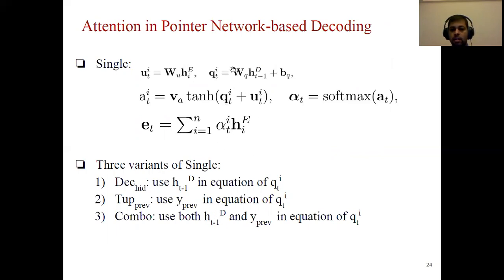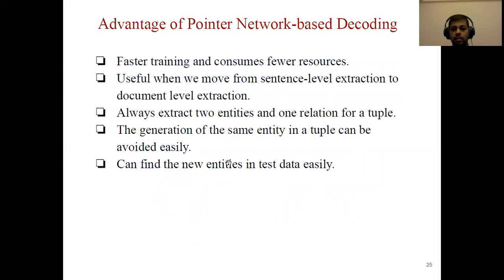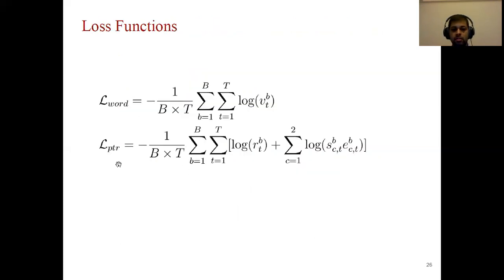The three attention variations are: using the LSTM hidden vector to compute query q; using y_prev to compute q; and using a combination of the hidden vector and y_prev to compute q. There are clear advantages of the pointer network-based decoding: training is much faster and consumes less GPU memory; it always extracts exactly two entities and one relation for a tuple; and generating the same entity in a tuple can be easily avoided using our inference constraints. Since it points to the source sentence for entity locations, it is easier to identify new entities during inference.